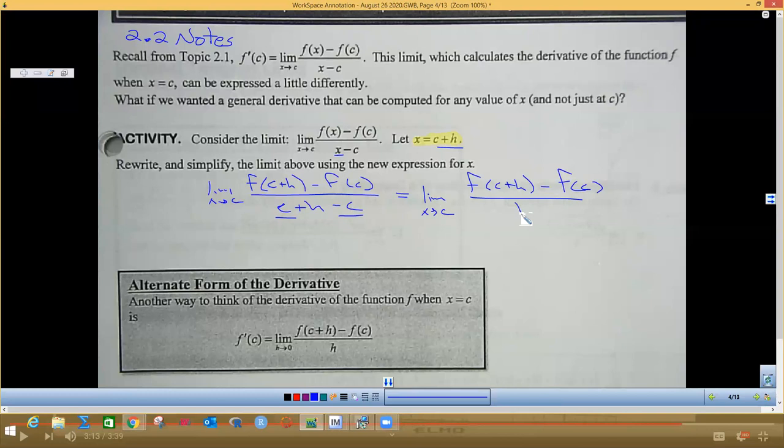And that gives us this alternate form of a derivative. Another way to think of the derivative of the function f when x equals c is this alternate form of h, and we're going to let this c be zero when we do this. And I hope you can see that's going to give us zero over zero, which is going to be something we can fix in the future.